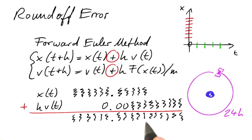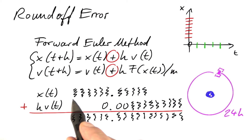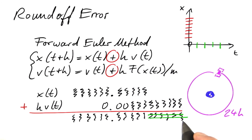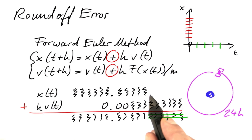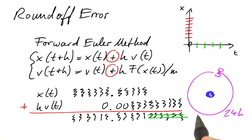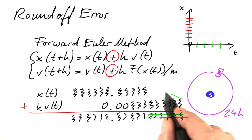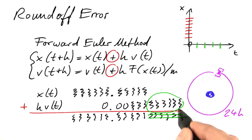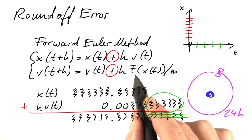Actually, this resulting number is computed and stored at the precision of x. We lose precision in that process. The value of x didn't have enough precision to start with. The smaller we choose the step size, the smaller this term becomes, and the more grave the effect of round-off error will be. The round-off error causes us to lose the details of velocity and force.